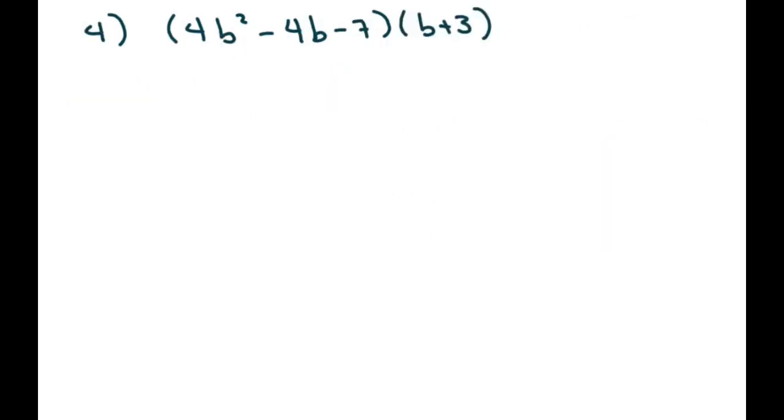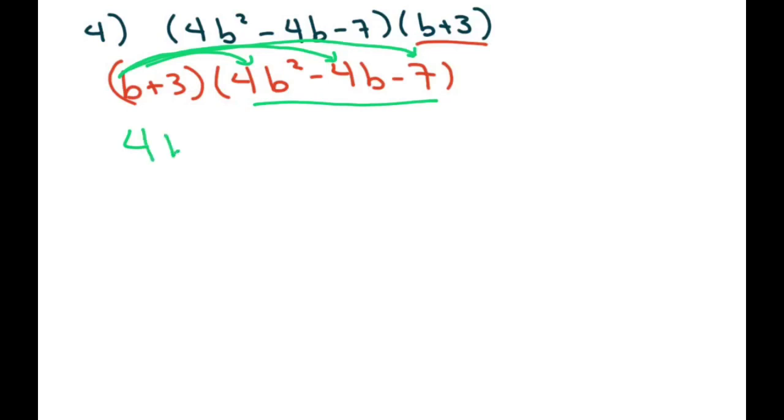And this one is the more tedious one. I like to put my binomial in front. So I'm just going to rewrite that. You don't have to do that. But I like to do that. And you're going to multiply this b by all three terms. So in that case, you're just tacking on the b here. So instead of 7, it's 7b. Now we're multiplying each of these terms by 3. So we're going to do plus 12b squared minus 12b minus 21.